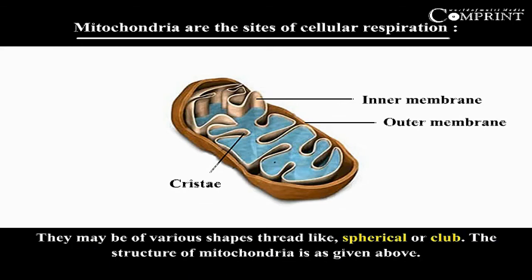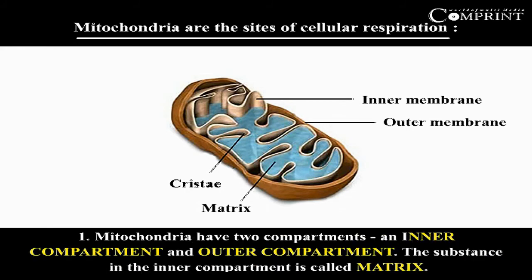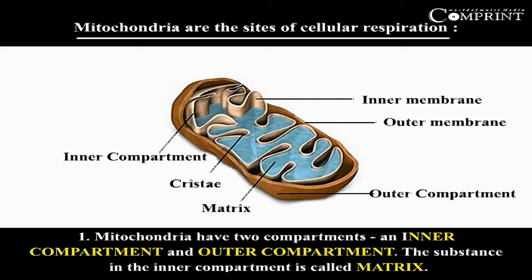Mitochondria are sac-like structures present in the cytoplasm of cells. They may be of various shapes: thread-like, spherical, or club-shaped. Mitochondria have two compartments — an inner compartment and an outer compartment.